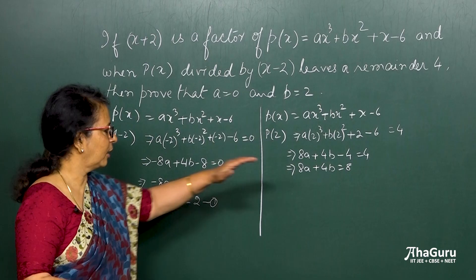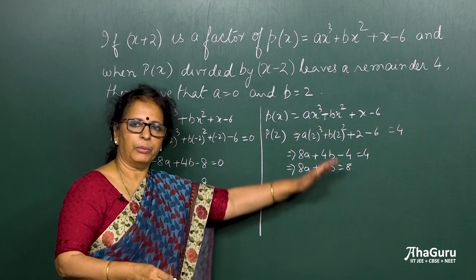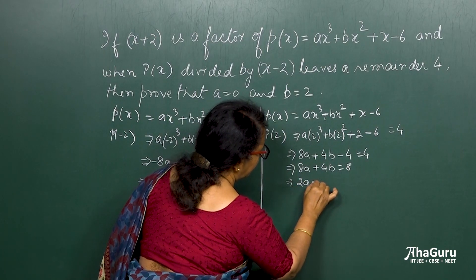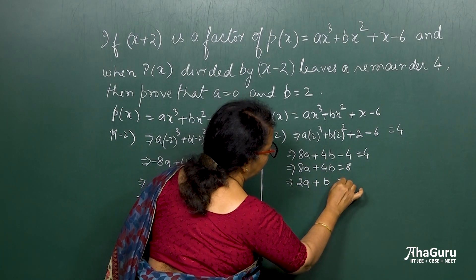Just like this. Here also I can divide everything by 4. So when I divide by 4, I get 2a, this will give me just b, and that will give me 2.